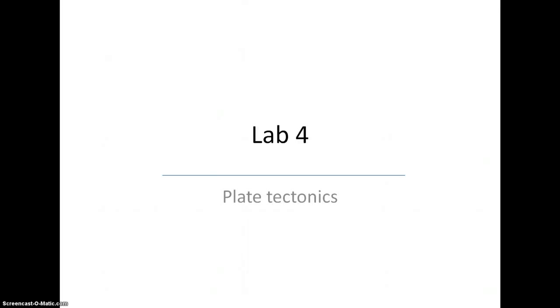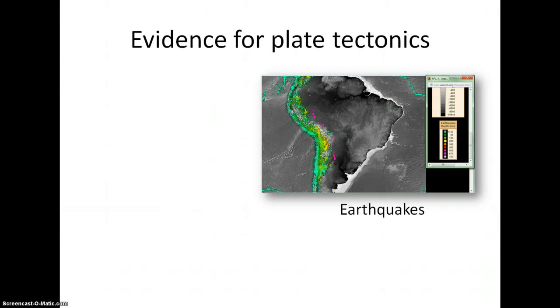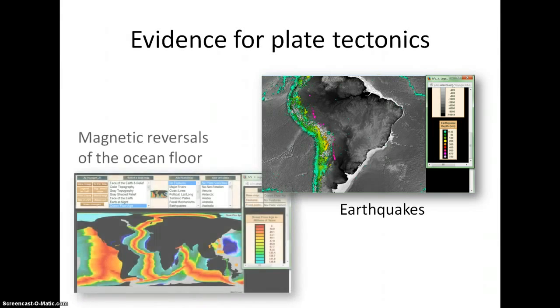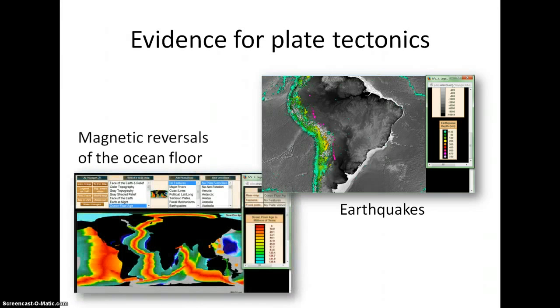Welcome to Lab 4 for Physical Geography. In this lab, we will be looking at evidence for plate tectonics and calculating the movement of tectonic plates over time. As we have discussed in lecture, major pieces of evidence for the theory of plate tectonics are earthquakes, volcanoes, and the reversal of the Earth's magnetic field as recorded in the rocks of the ocean floor.